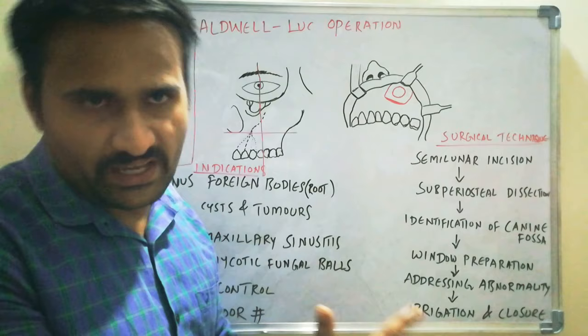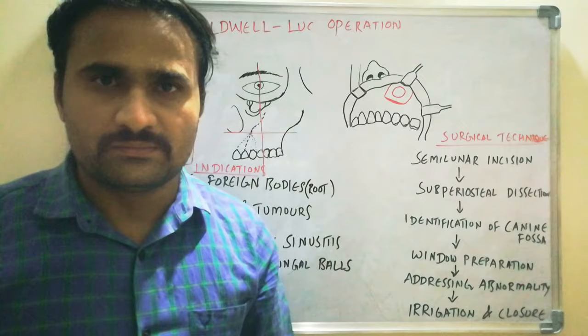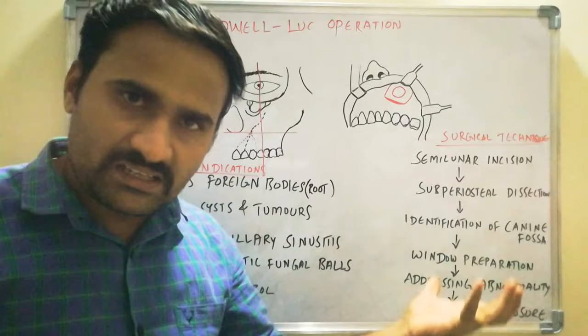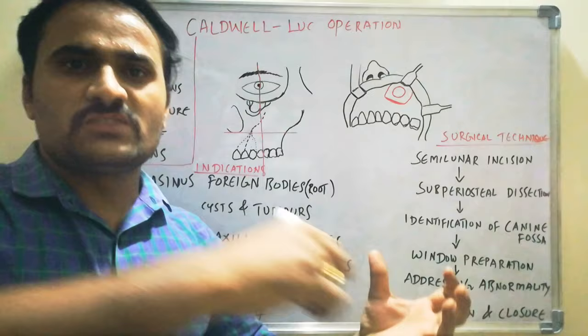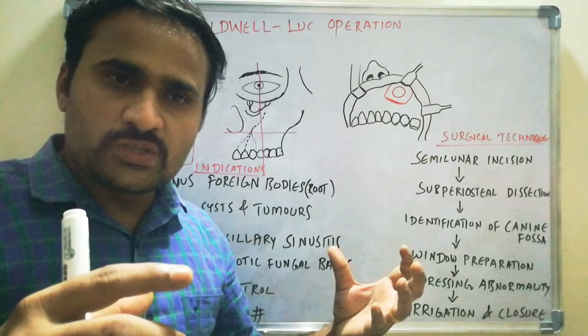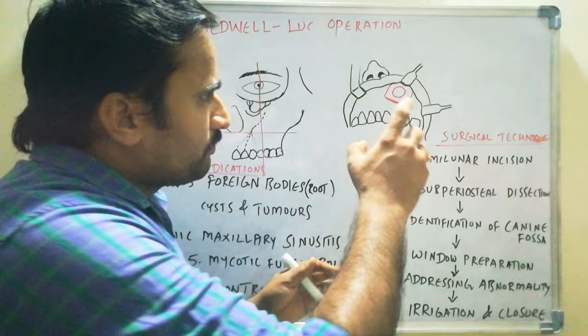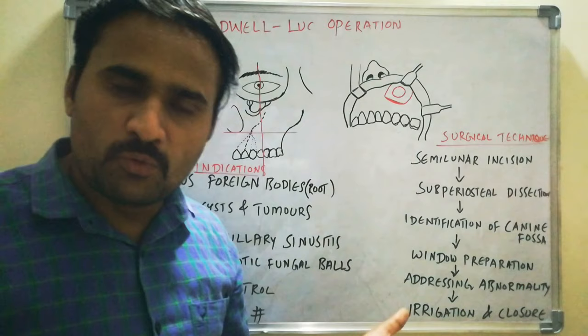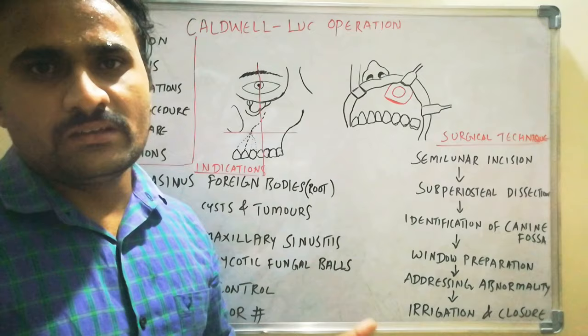After window preparation, you address the abnormality. For foreign body removal — such as a root that has escaped into the Maxillary Sinus — you can irrigate the Maxillary Sinus so that the root piece is flushed out. Alternatively, you can use vacuum suction pressure at the window point so that the root is sucked out. If it is for cysts or tumors, you completely remove the inflamed Maxillary Sinus lining or any sinus cysts.